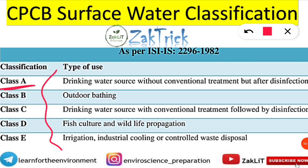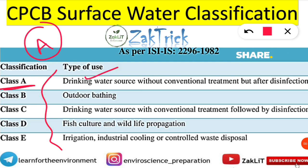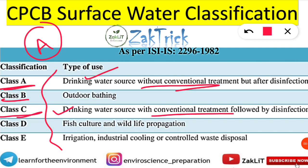To recap: Class A — A-grade, first-class surface water used for drinking without conventional treatment. Class B — B for bathing, used for outdoor bathing. Class C — C for conventional treatment required before drinking. Class D — fish are rich in vitamin D, so Class D is for fish culture and wildlife propagation. Class E — E sounds like irrigation and industrial, used for irrigation, industrial cooling, or controlled waste disposal.